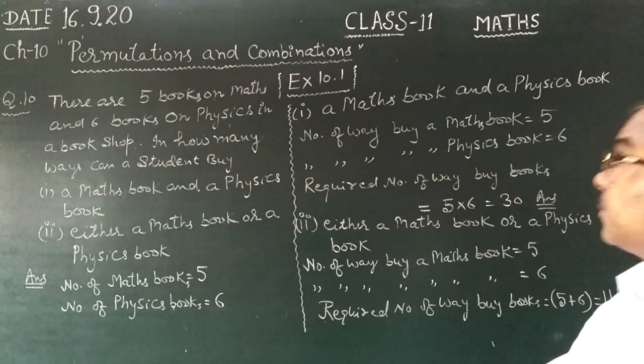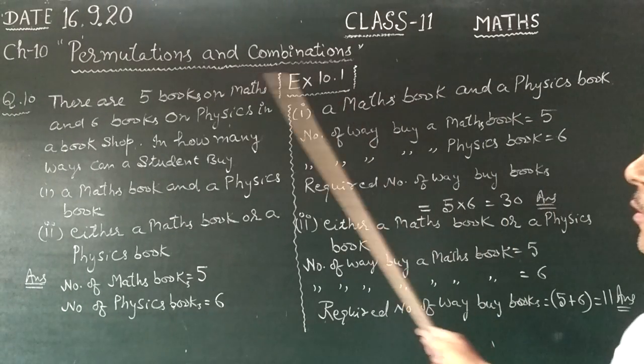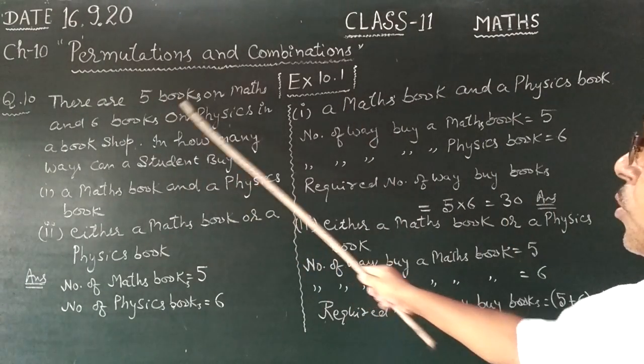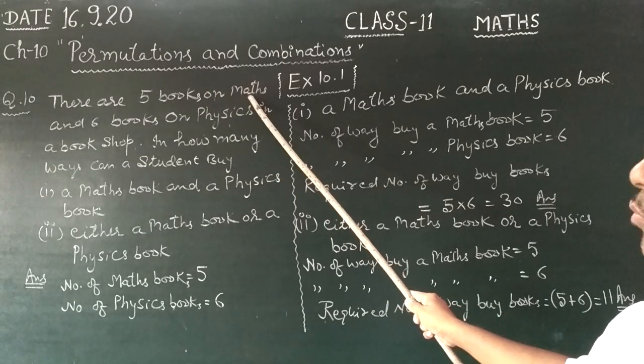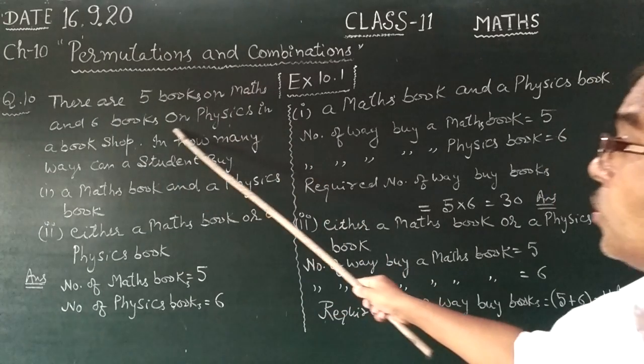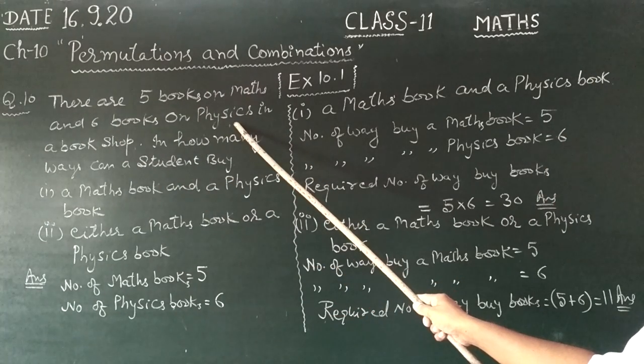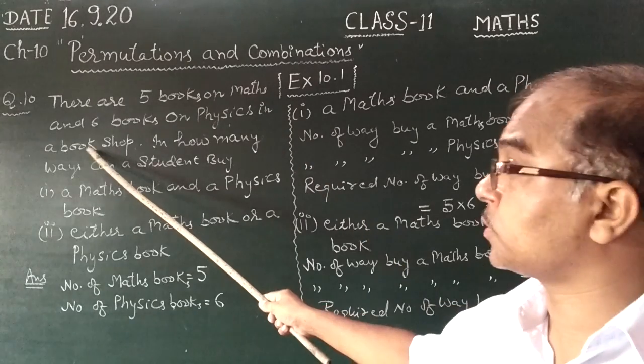Question number 10, part exercise 10.1. There are 5 books on math and 6 books on physics.